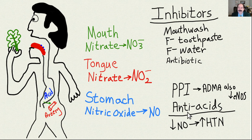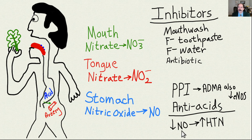In addition, antacids will also decrease stomach acidity and thus decrease the stomach's ability to convert nitrite into nitric oxide. When you don't have nitric oxide, you're more prone to getting hypertension — and it can be surprisingly significant hypertension.